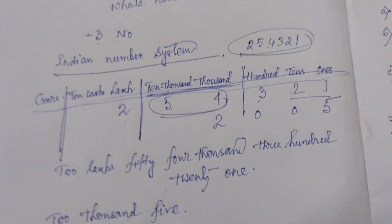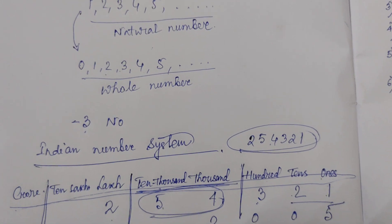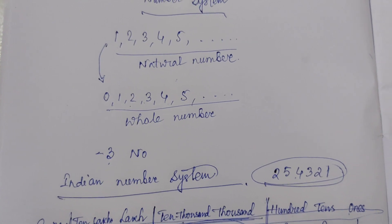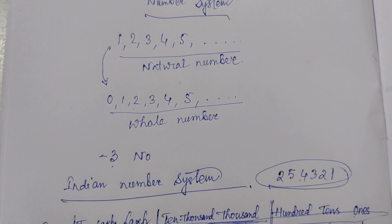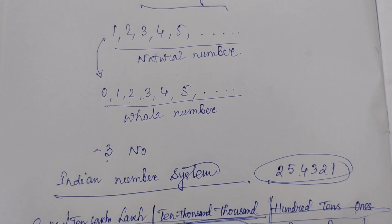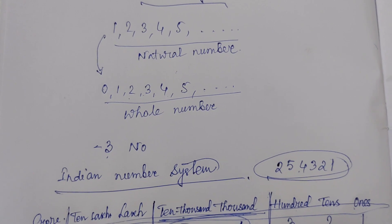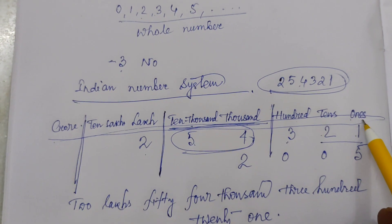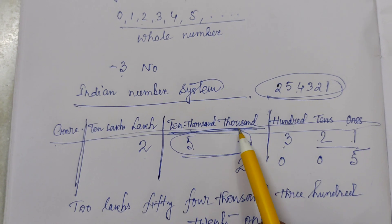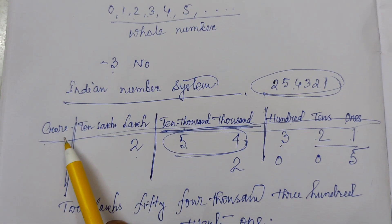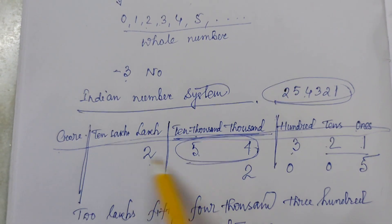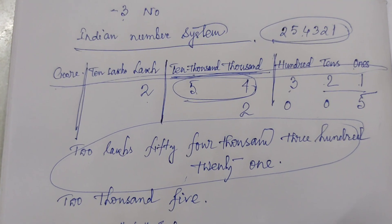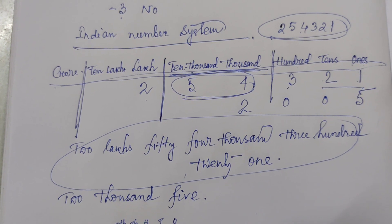So what we have discussed: first, natural numbers — natural numbers start from one up to infinite. Then whole numbers — whole numbers start from zero up to infinite. Then the Indian number system: at the rightmost is ones, tens, hundreds, thousands, ten thousands, lakhs, ten lakhs, crore. According to the Indian number system, we can write the name of any number given to us.